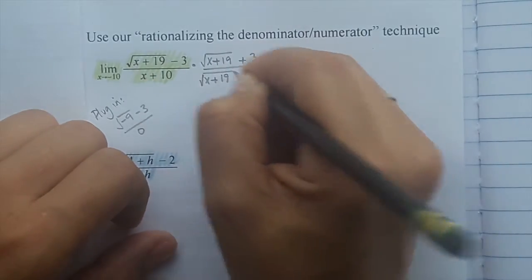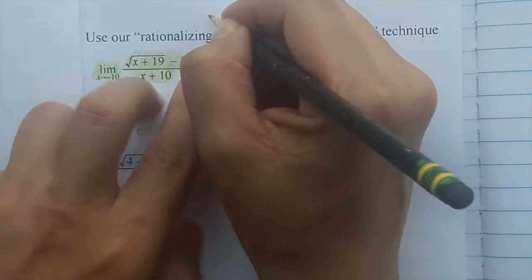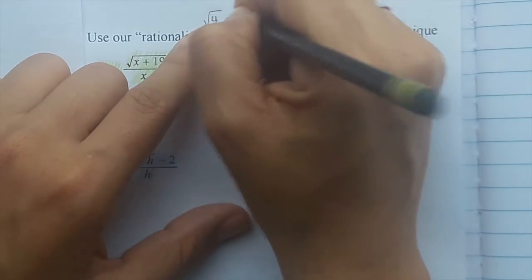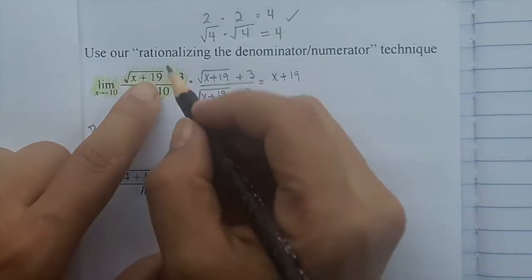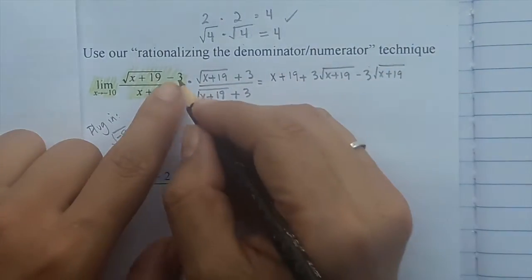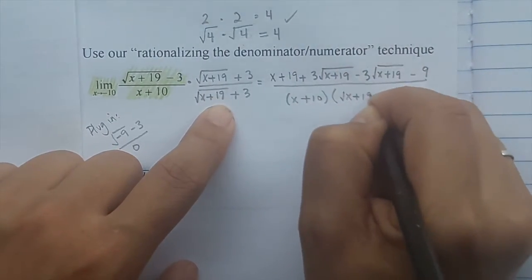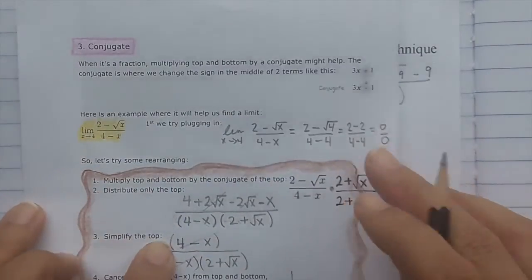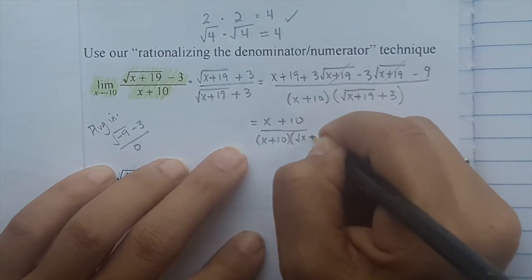Distribute the top only. Remember, radical times radical gives whatever is inside, as long as it's exactly the same radical. For example, radical 4 times radical 4 equals 4 — because radical 4 is 2, and 2 times 2 is 4. So that times 3 gives 3 times (radical x+19), and radical x+19 times radical x+19 gives x+19, minus 9. Leave the bottom without multiplying it out. Simplifying the top: 3 minus 3 cancels, leaving x plus 10 (since 19 minus 9 = 10).